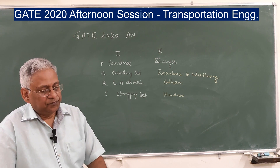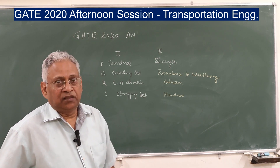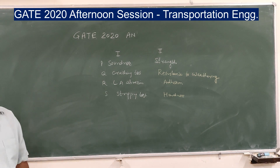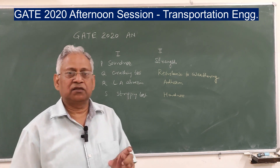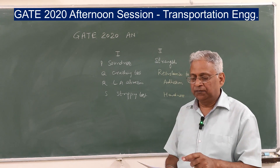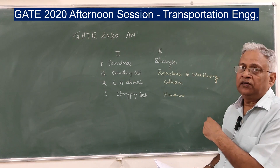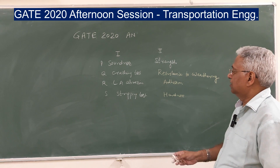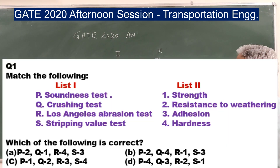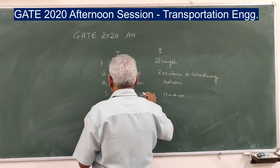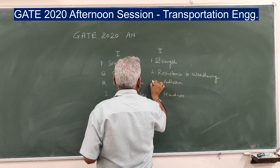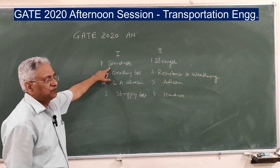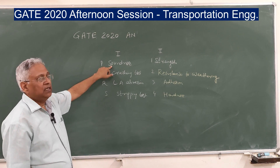The first question is on matching. Match the following — there are two lists. One list gives the test name and the second list gives the parameter estimated from these tests. The tests are: soundness test, crushing test, Los Angeles abrasion test, and stripping test. The parameters are: strength, resistance to weathering, adhesion, and hardness.